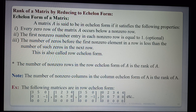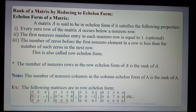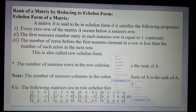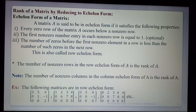Observing the example: the number of zeros increases — one zero, then two zeros, then similarly two zeros, then three zeros. So one, two, three — we can see the increasing number of zeros in each row, which confirms the row echelon form.